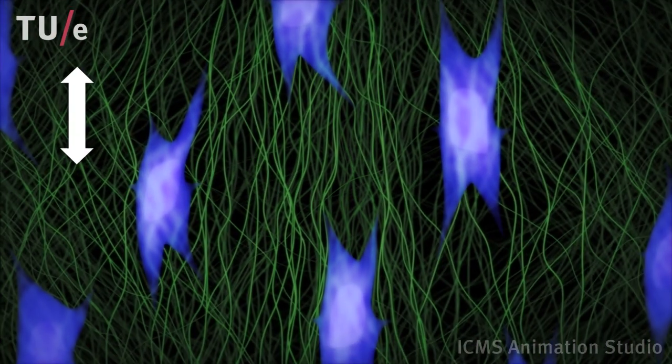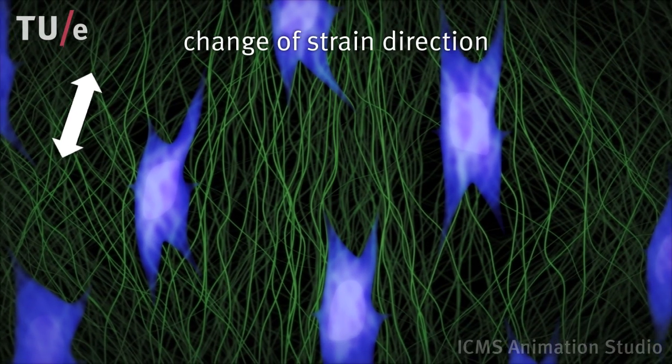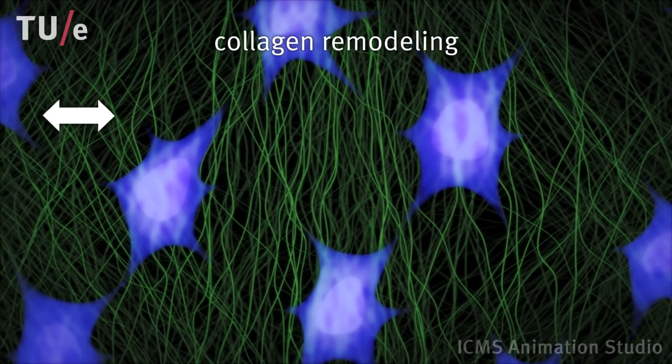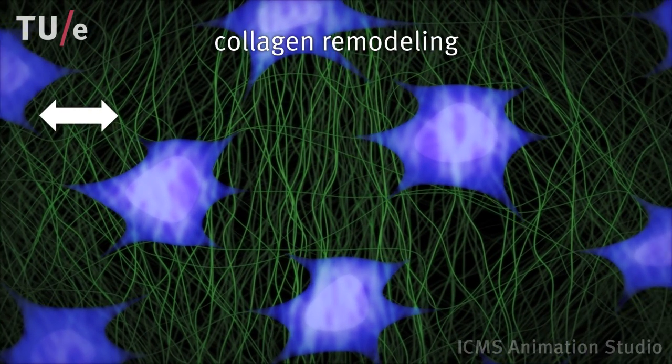The net result is an increased formation of collagen fibers in the direction of the applied load. When the load direction is changed again, cells and collagen fibers will remodel again.